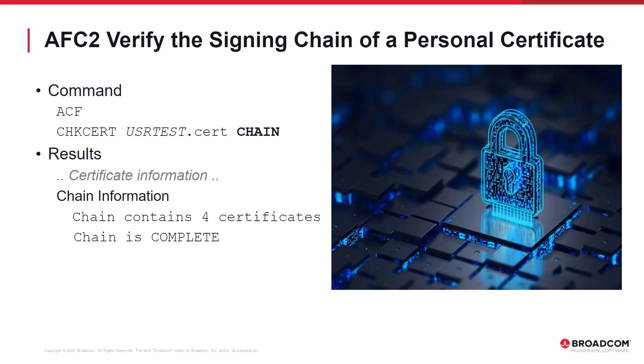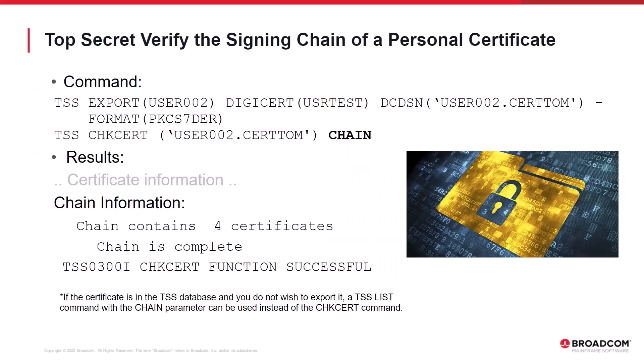Next, we will look at how to verify a personal certificate's chain of trust, starting with ACF2. The ACF2 'check cert' command with the chain parameter can be used to display information about a certificate and verify its signing chain. The check cert command will display all the certificate information for each certificate, followed by the chain information, indicating the number of certificates in the chain and whether the chain is complete. If the chain is not complete, that means a cert auth certificate in the signing chain is missing from the ACF2 database, which would cause authentication errors for the SSL connection. With Top Secret, the personal certificate must be exported to a dataset in a PKCS7 package for the check cert to be performed against the dataset.